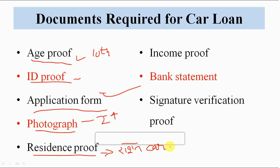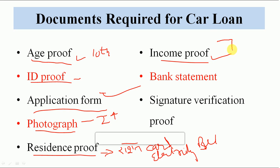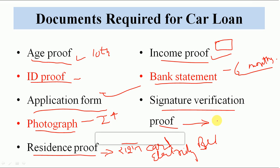Aapka residence proof — ration card, electricity bill se bhi aapka residence proof ban jata hai. Income proof mein jahan pe aap kaam karte ho uska identity card, aur bank mein jo salary aati hai uski last six months ki bank statement chahiye. Signature verification proof — jis bank mein aapka account hai, wahan se bank manager se ek application leni padti hai ki yeh mera signature hai, woh verify karke deta hai. Yeh process bohut easy hai. In documents ke saath within 2-3 days aapka car loan approve ho jata hai.